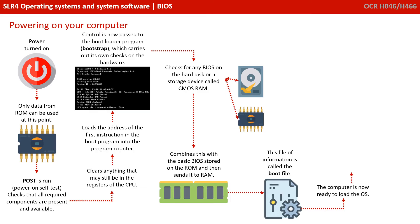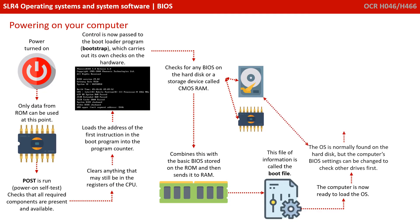The computer is now essentially ready to load up your operating system. The operating system is normally found on the hard disk, but the computer's BIOS can be configured to check other drives first. This allows you, for example, to boot a computer that has become corrupt off a USB pen or an optical drive.